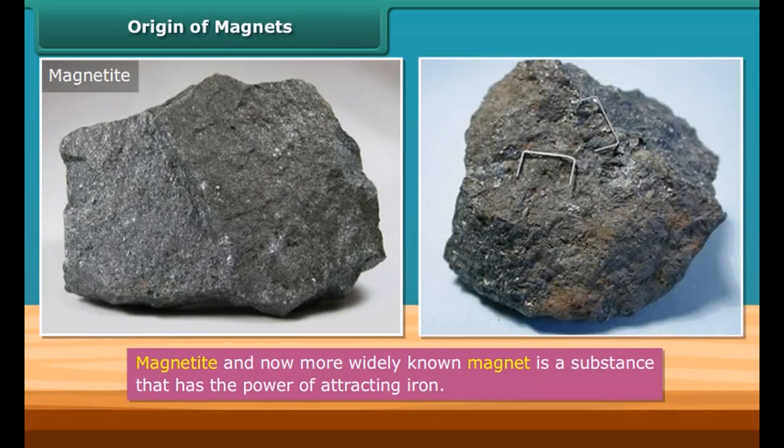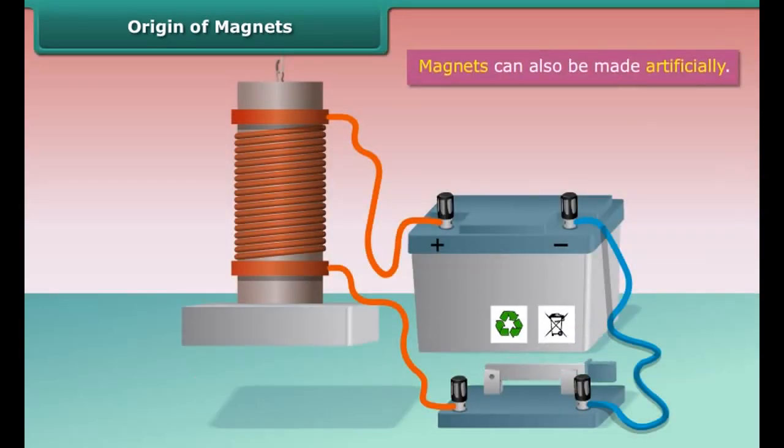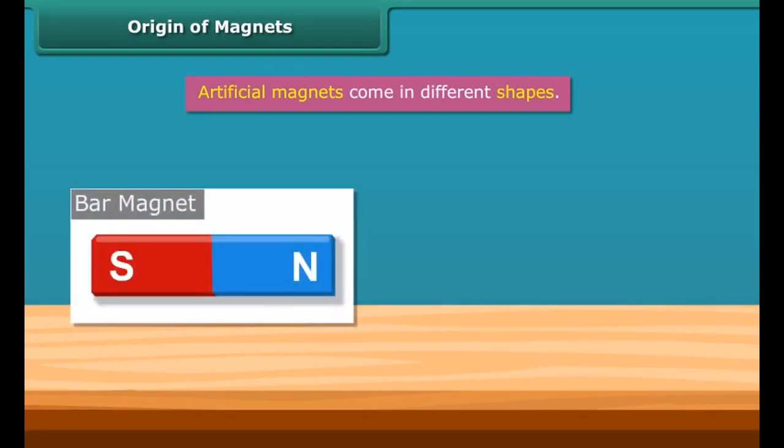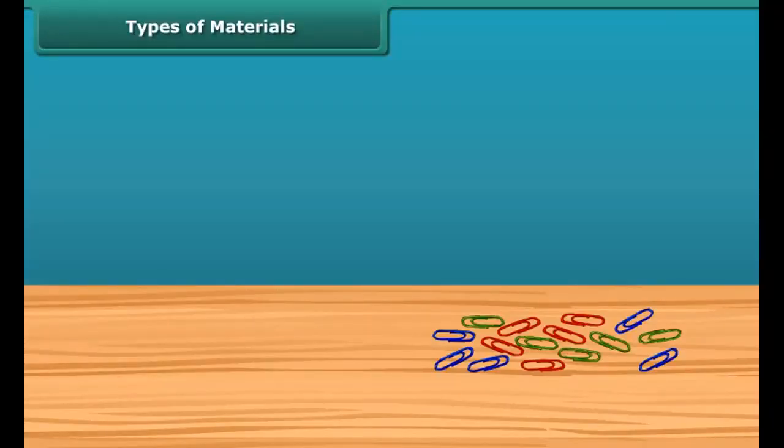Origin of magnets. Magnetite is a natural magnet and contains iron. In the later days, this was more widely known as a magnet. A magnet is a substance that has the power of attracting iron. Magnets can also be made artificially. However, the process of making artificial magnets is a recent discovery.